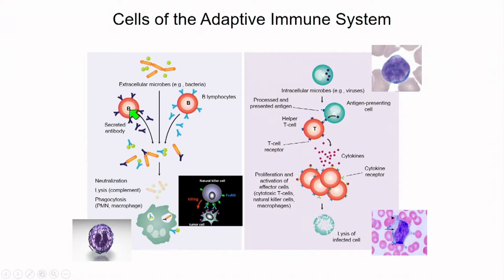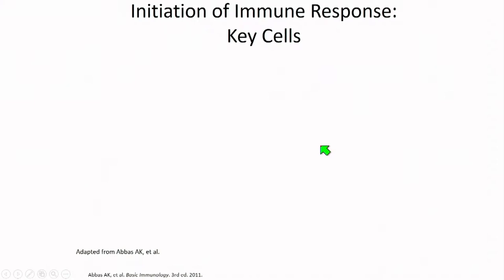The adaptive immune system is based on two types. B lymphocytes are responsible for specific antibody production generated against extracellular epitopes or microbes with specific antigen — the classic lock-and-key effect. This results in neutralization, lysis, and phagocytosis. The T cell response involves antigen-presenting cells taking up an antigen, presenting it, and activating specific T cells that will have long-term memory.